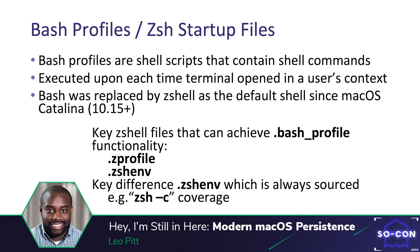First is bash profiles and Z-Shell start file equivalents. This is a common persistence method on Linux — bash profiles are shell scripts containing shell commands executed each time a terminal is opened in a user's context. Note that Z-Shell has replaced bash as the default shell on macOS Catalina; however, we can still use the same persistence method through Z-Shell equivalent files. The direct comparison to bash profile is the Z-profile shell. Additionally, Z-Shell provides an extra file called the Z-Shell environment file, which executes in more instances than just the standard Z-profile — it's sourced in pretty much every interaction with Z-Shell, even with a command-line `zsh -c` execution, giving us more coverage for persistence.